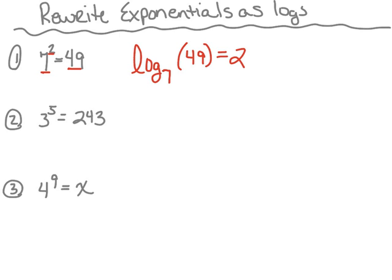Let's try another one. Number 2, we've got the exponential 3 to the 5th power is equal to 243. We're going to rewrite this in the form of a log. We'll start with the log. The base for this exponential is 3, so that's the base we're going to use — notice that's a subscript 3. Then we put the argument, which is 243, and it equals to the exponent, which is 5. So we read this as log base 3 of 243 equals 5.